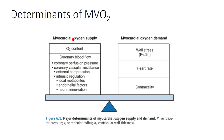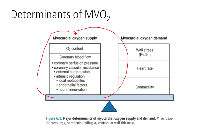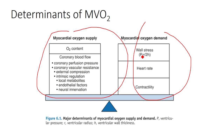Factors affecting myocardial oxygen supply include oxygen content, coronary blood flow, and perfusion pressure. Factors affecting myocardial oxygen demand include wall stress — a combination of ventricular pressure, ventricular radius, and ventricular wall thickness — as well as contractility and heart rate, which is probably the most notable factor we can assess clinically.